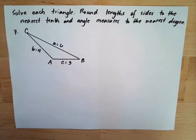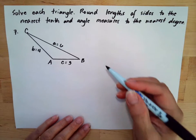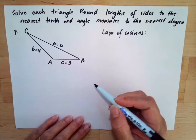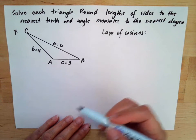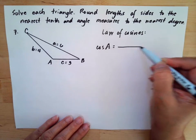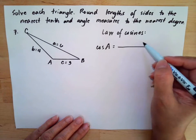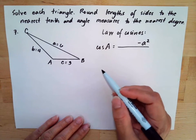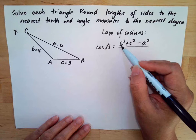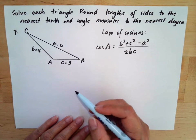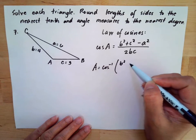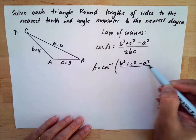When three sides are given, we need to use the Law of Cosines. For finding an unknown angle, the strategy is: cosine of angle A equals B squared plus C squared minus A squared, all over twice of BC. So angle A is the inverse cosine of (B squared plus C squared minus A squared) over (2BC).